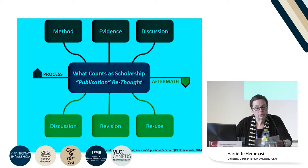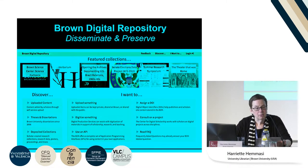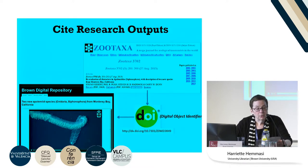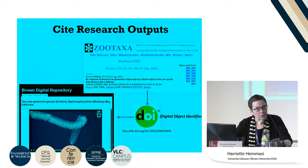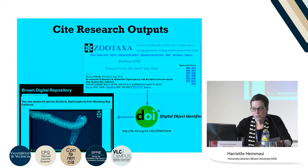As the boundary of what counts as scholarship changes, both before and after publications, one of the most important services developed by the library is the Brown Digital Repository. The repository enables us to cite research projects. For example, a student published a paper but was not able to include the video documentation, and so the library was able to provide a DOI — a digital object identifier — a stable location that could be included in the publication materials.